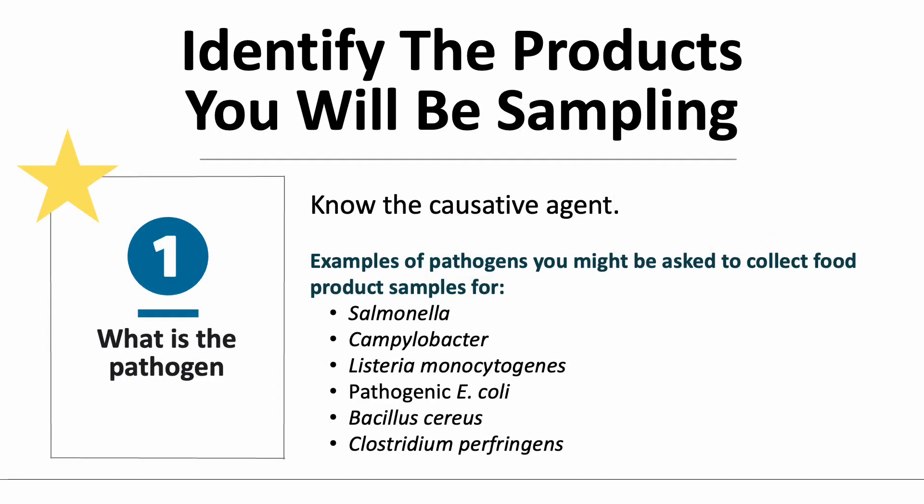Knowing the potential causative agent or pathogen you are looking for can help prepare you for product sampling. Some examples of pathogens you might be asked to collect food product samples for include Salmonella, Campylobacter, Listeria monocytogenes, Pathogenic E. coli, Bacillus cereus, and Clostridium perfringens.